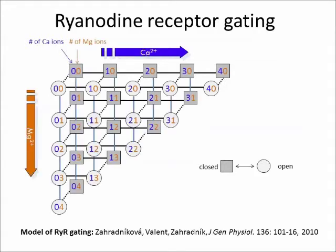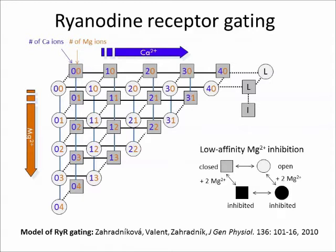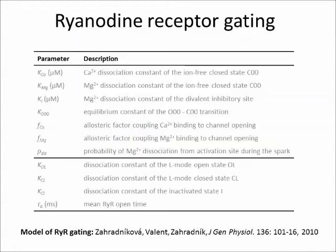The ryanodine receptor has a set of states differing in the occupancy of the activation sites by calcium and magnesium. Additionally, every now and then the channel makes transitions into long-lived low-activity and inactivated modes, which are supposed to occur in fully calcium-bound channels. Apart from its action at the activation sites, magnesium inhibits the channel at a separate site, and this inhibition seems to be independent of the other channel transitions. Despite the complexity of the model, it has only 11 parameters, of which we studied 7.